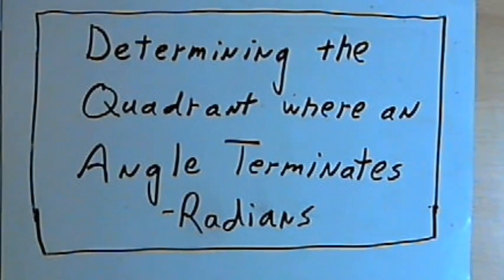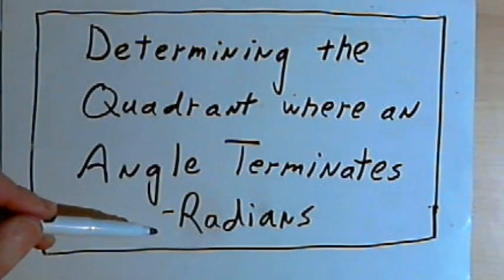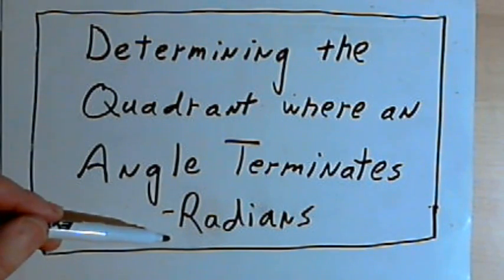This video is provided as supplementary material for courses taught at Howard Community College. In this video, I want to show how to determine the quadrant where an angle terminates, and specifically I want to deal with angles that are measured in radians.